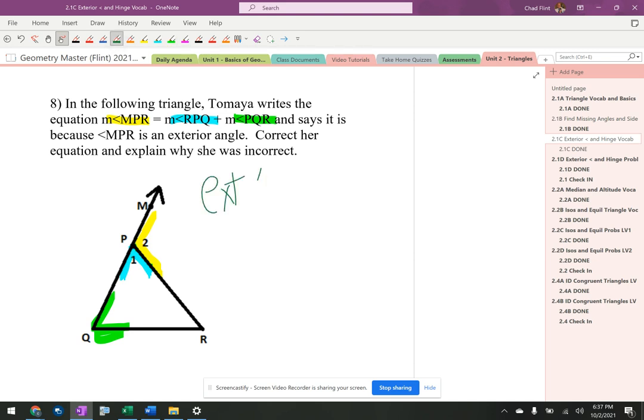The exterior angle equals the sum of remote interior angles. Remote interior means away from the exterior angle.